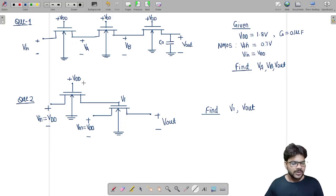Similarly, in question number two, we have two NMOS connected in cascaded configuration, and we have to find out V1 and Voutput. In question number two, the VDD is the same as given in question number one, that is 1.8 volts, and VIN equals VDD.